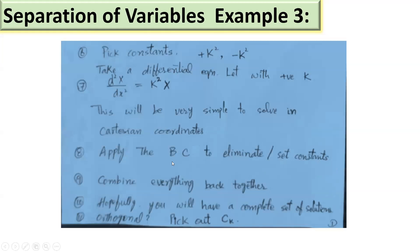Next, we need to introduce separation constants. We will add plus K squared or minus K squared, then write a differential equation for each. This differential equation is very easy to solve in Cartesian coordinates. We apply boundary conditions and, with constant values, we solve each equation. To finish, we combine everything back together and hopefully have a complete set of solutions.